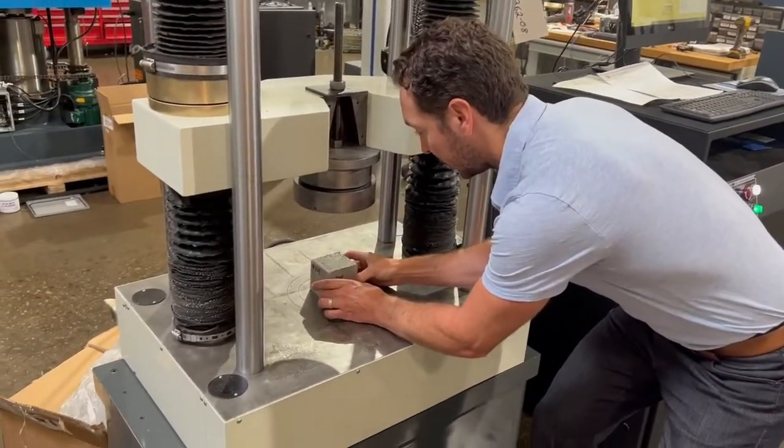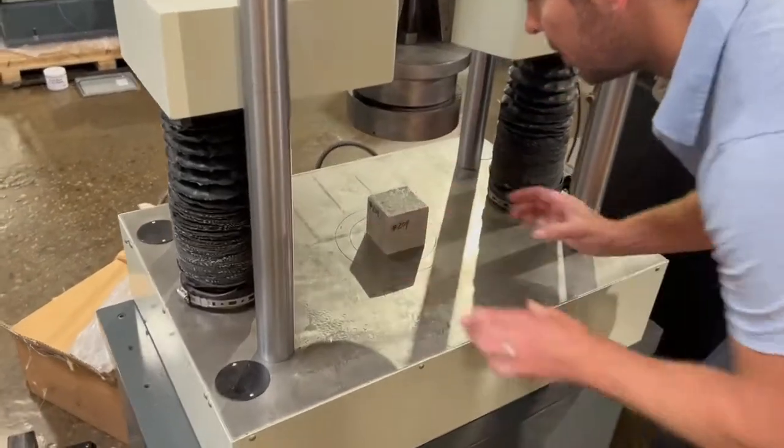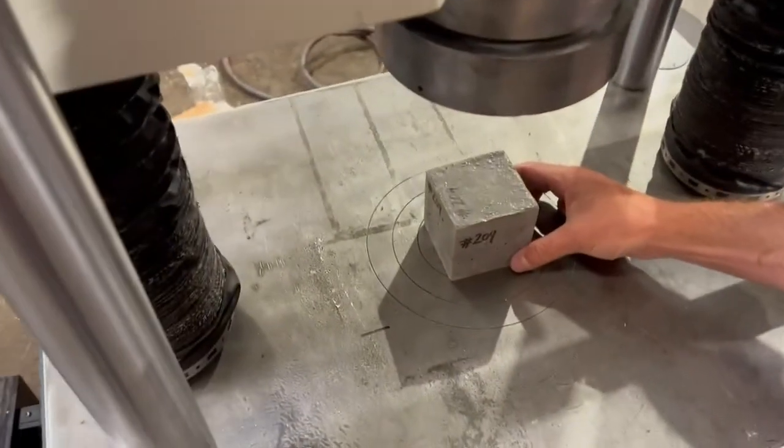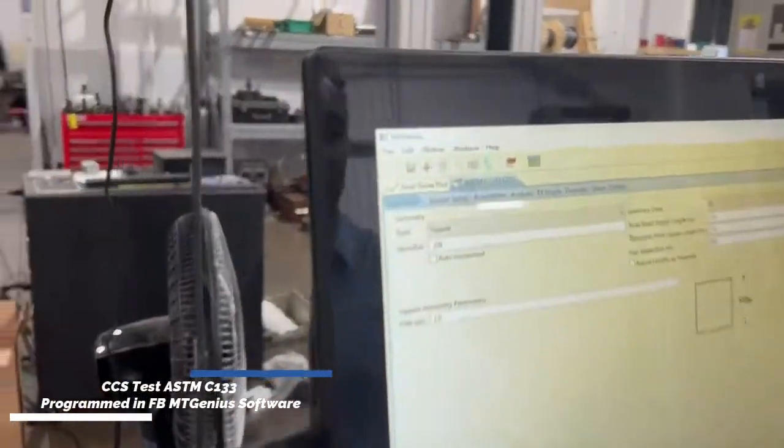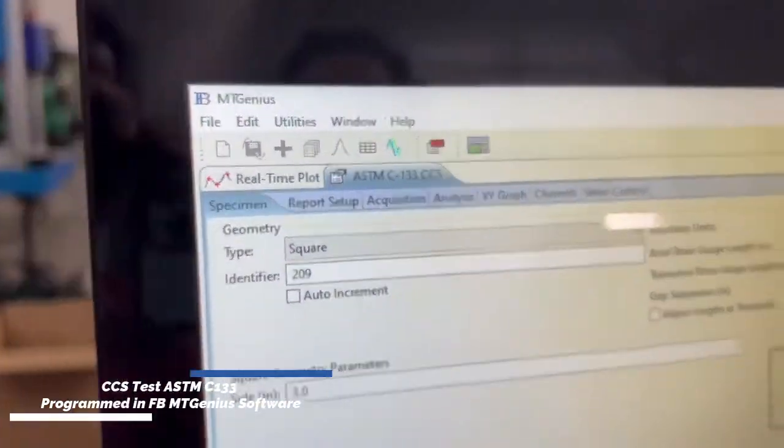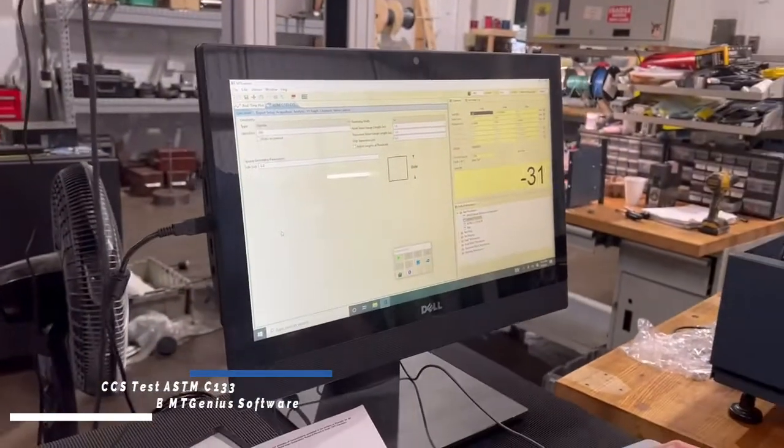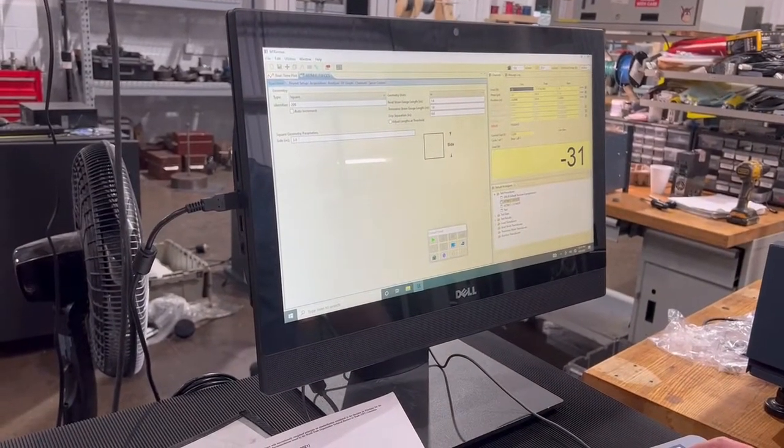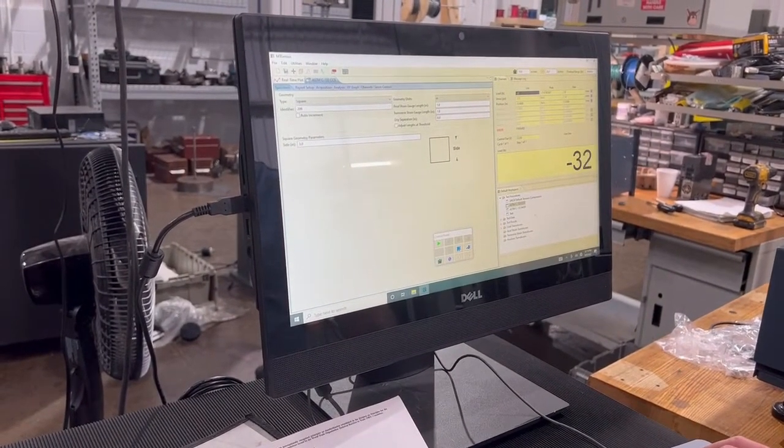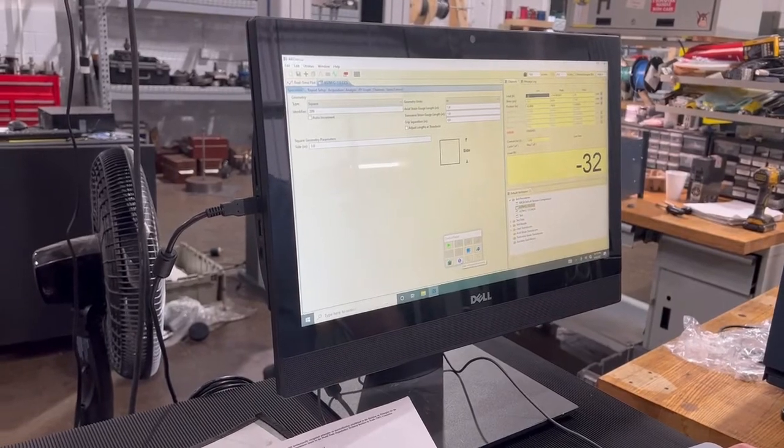Center it on your lower compression circles. We got our CCS pre-programmed ready for testing. We've got a specimen identifier. This is specimen number 209. Like I said, a 3x3x3 cube and we're going to zero this down.